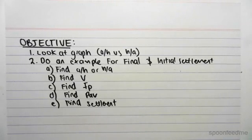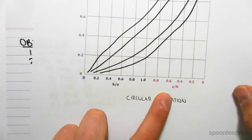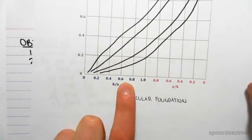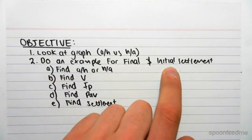Hey guys, the objective of this video is to look at the graph for the circular foundation and look at what h on a is compared to a on h, because that's on the same axis. We're going to see what that is in a second. Then we're going to do an example for final and initial settlement of a circular foundation.